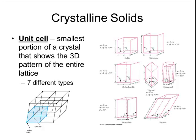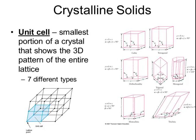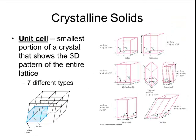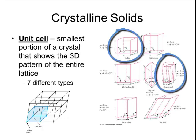If you take a crystal and zoom in to look at the individual particles, the smallest portion of that crystal that shows the three-dimensional pattern of the entire lattice is called the unit cell. You can see in the picture at the bottom that there is a box of particles outlined in blue — that's the example of the unit cell. That unit cell repeats over and over in an organized pattern that ends up creating the entire shape of the crystal. There are actually seven different types of unit cells, such as the cubic or the hexagonal shown on the previous slide.